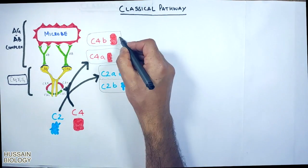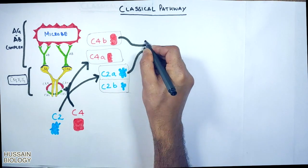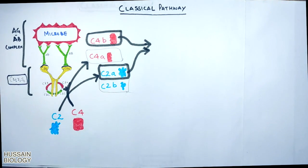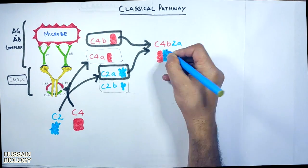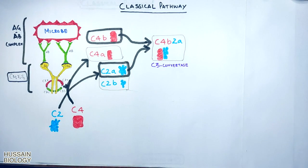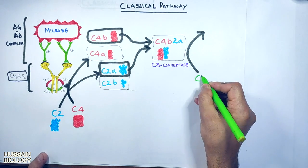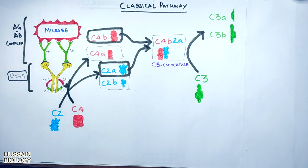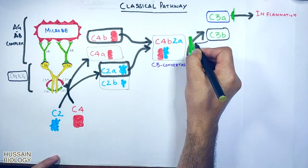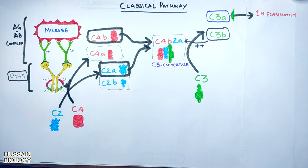After that, C4b and C2a combine together and form an enzyme complex called C4b2a. This is called the C3 convertase. By its name it works on C3 and cleaves it into C3a and C3b.